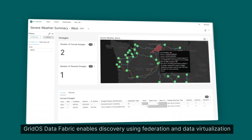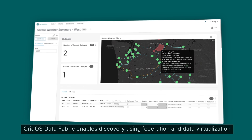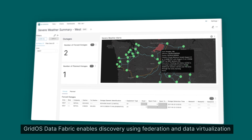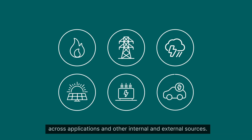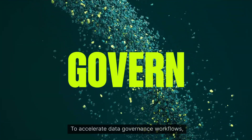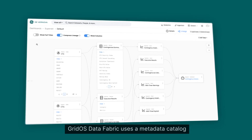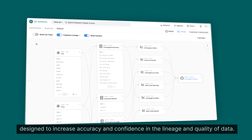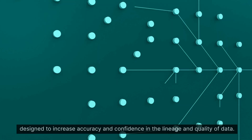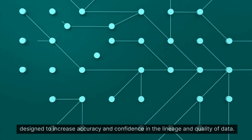Grid OS Data Fabric enables discovery using federation and data virtualization across applications and other internal and external sources. To accelerate data governance workflows, Grid OS Data Fabric uses a metadata catalog designed to increase accuracy and confidence in the lineage and quality of data.